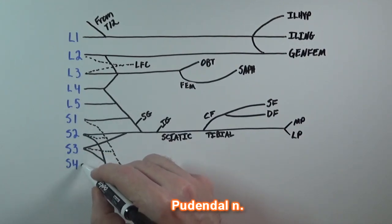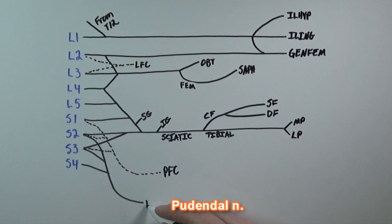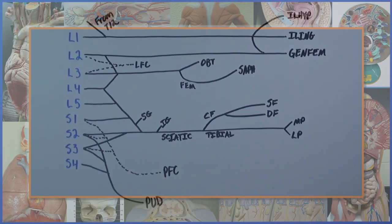The pudendal nerve takes an interesting path, where it exits the pelvis through the greater sciatic foramen, passes over the ischial spine, and then re-enters the pelvis through the lesser sciatic foramen, to supply the perineum.